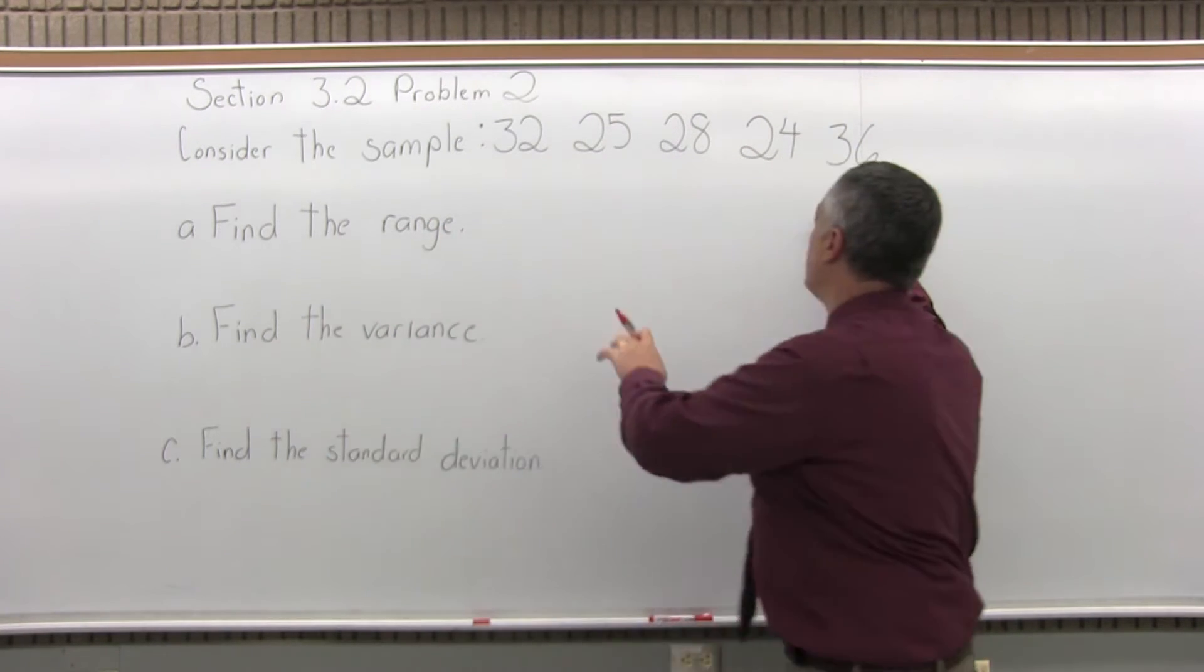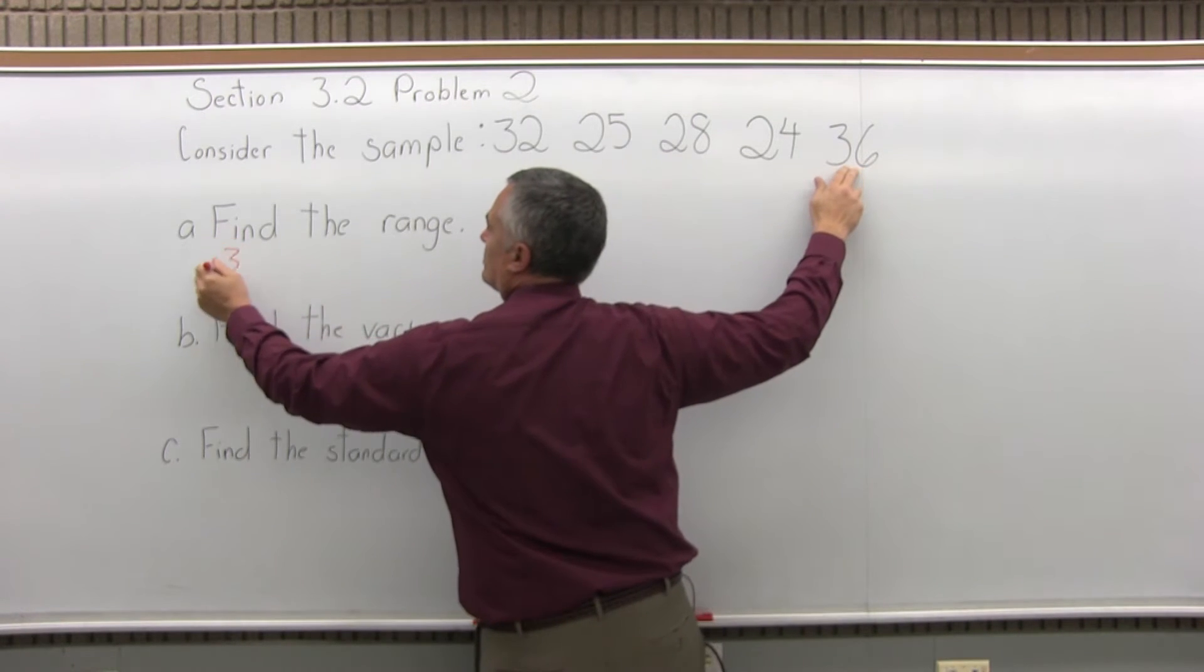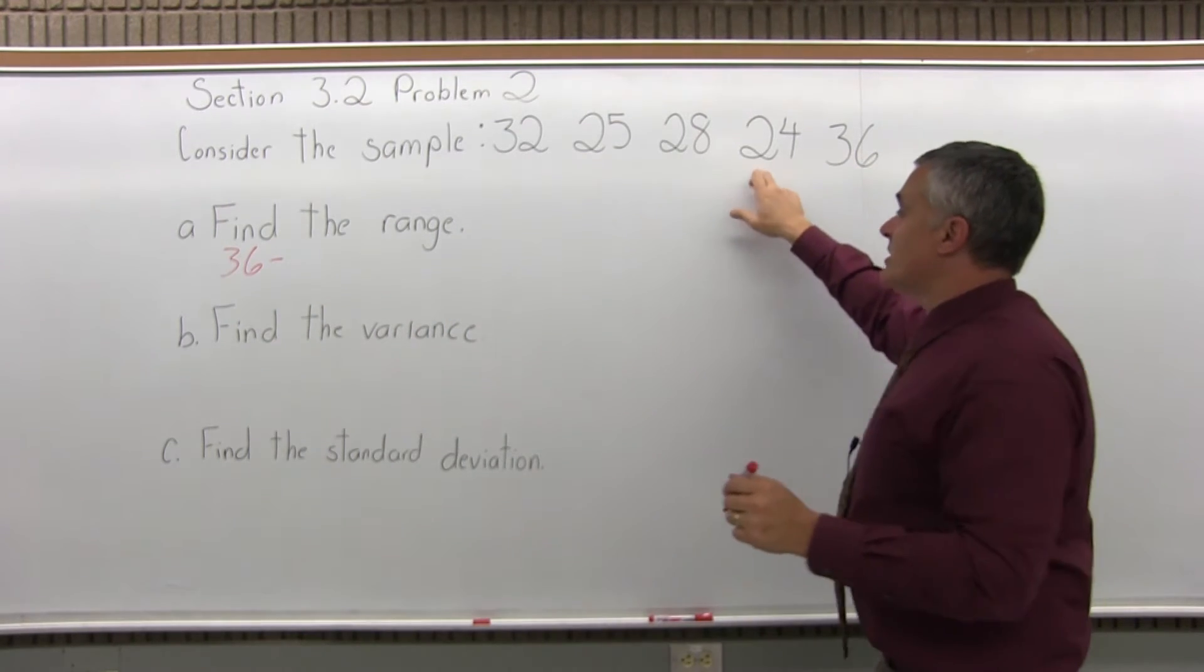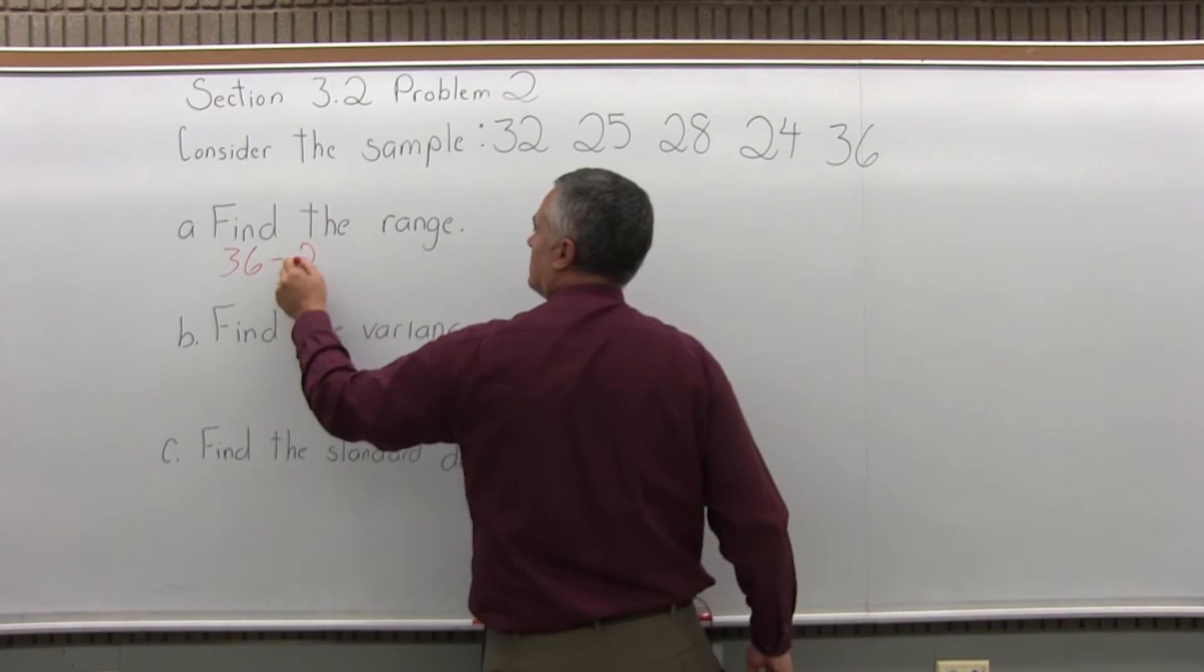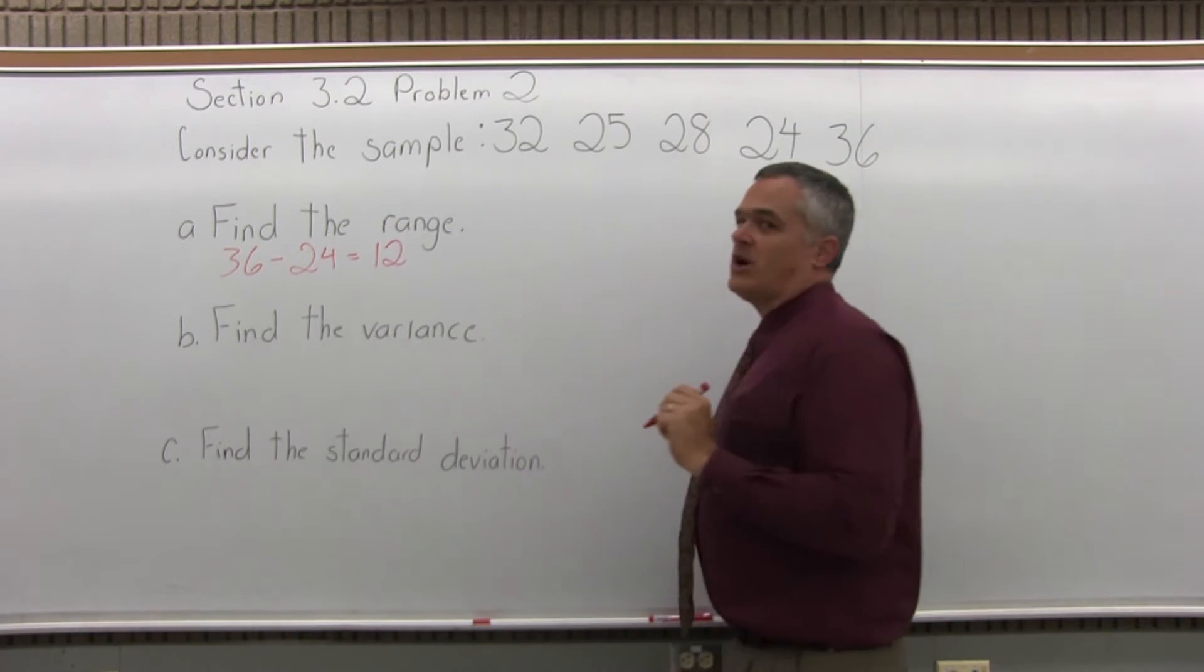As you look at the data we have, the biggest one is 36. So we'll do 36 minus, and the smallest one is 24. So 36 minus 24 is 12. We have a range of 12.